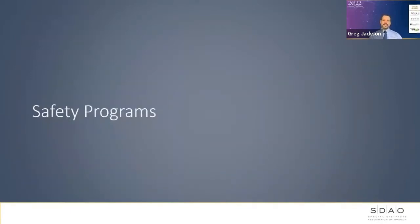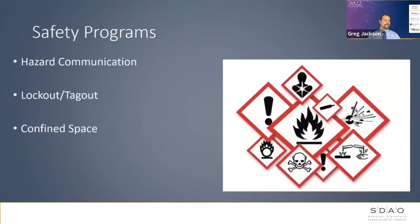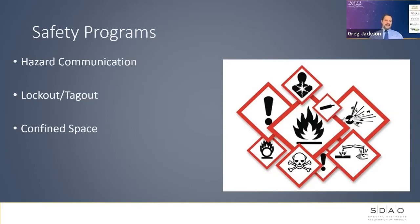Moving right along, we're going to switch gears into some of the more basic safety programs that may be required. I'm only going to be touching on the highlights of these programs. If you want or need more in-depth information about them, please ask our department and we can get back to you. First, let's talk about hazard communication. If you have chemicals at your facility — more than household quantity — you're probably going to need to have a hazard communication program.